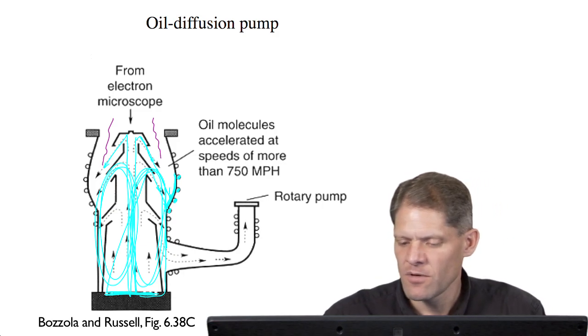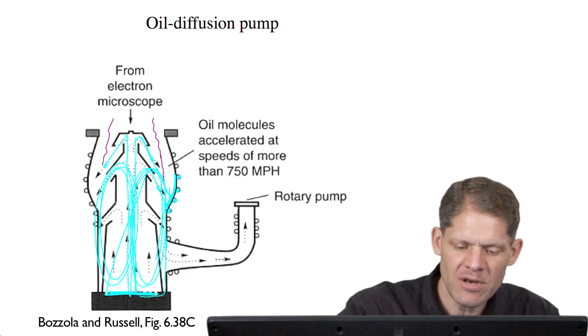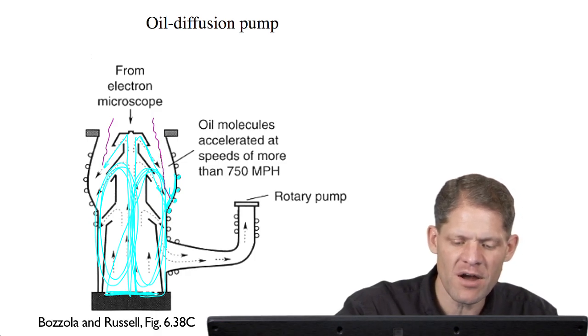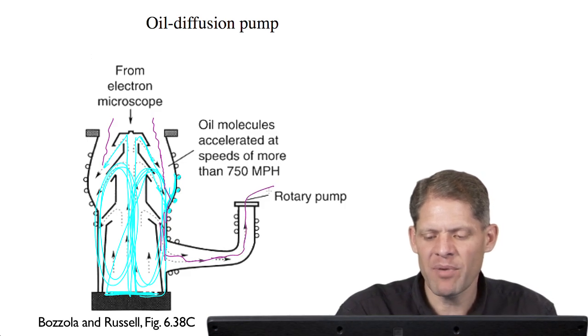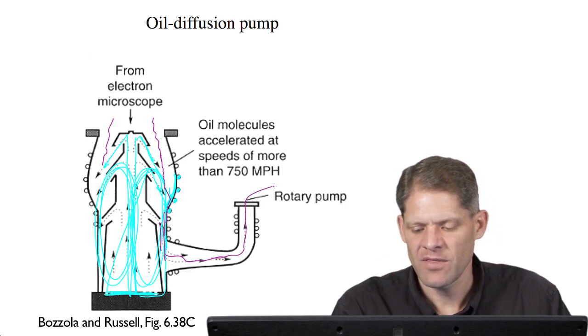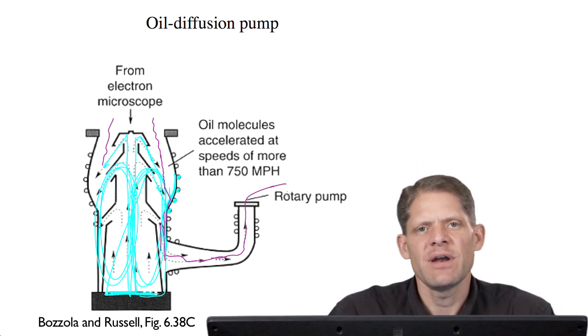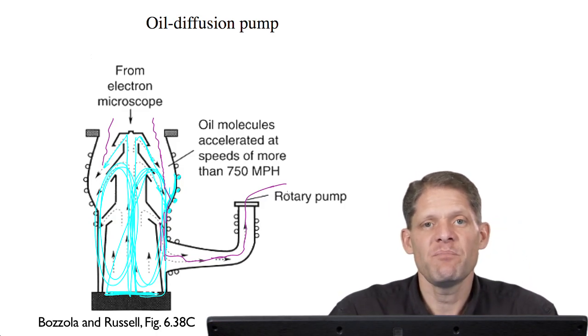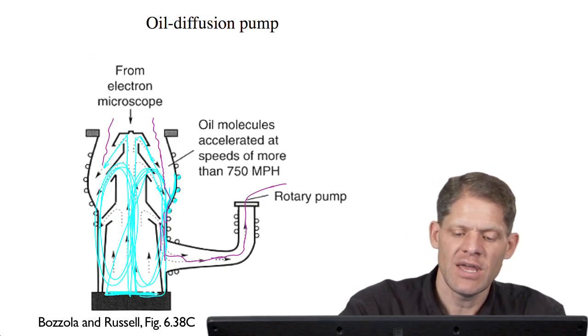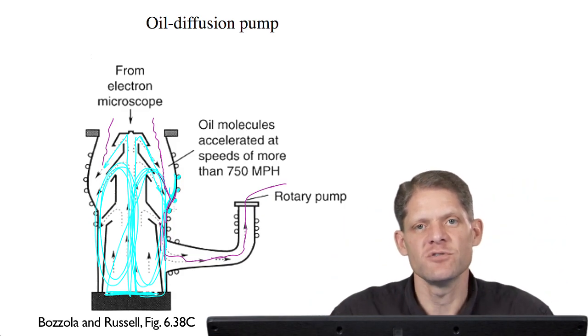And as gas molecules from the column come in here, they're hit by oil molecules and knocked down into the oil and pushed down further and further in through the pump. And eventually they escape and are exhausted and are passed to a holding tank that is pumped by the rotary pump. Now the oil diffusion pump is quieter. But every once in a while at the electron microscope, you can hear a little pinging sound. And that pinging sound can be oil molecules hitting the sides of the oil diffusion pump as they carry gas molecules down and away.